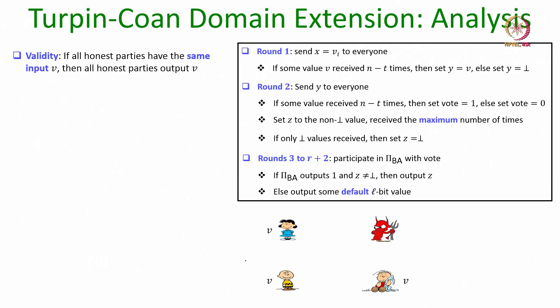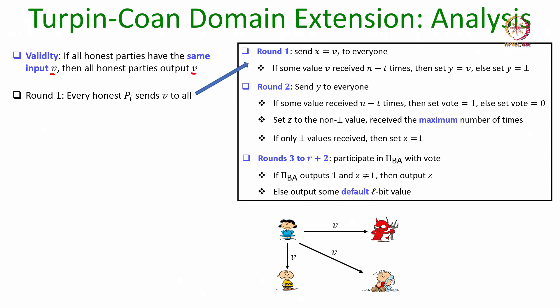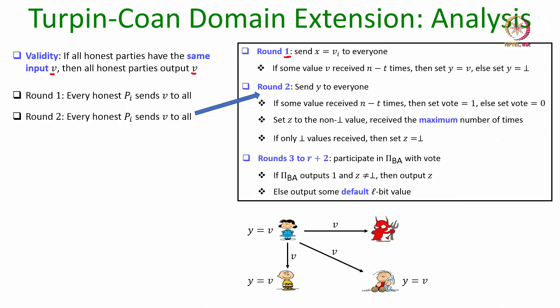Now let us argue the validity condition. We want to show that if all honest parties have the same L-bit input V, they output that same V. If all honest parties have the same L-bit string V, then every honest party sends that string V to everyone during round 1. Corrupt parties may send different L-bit strings — we do not care what they send.